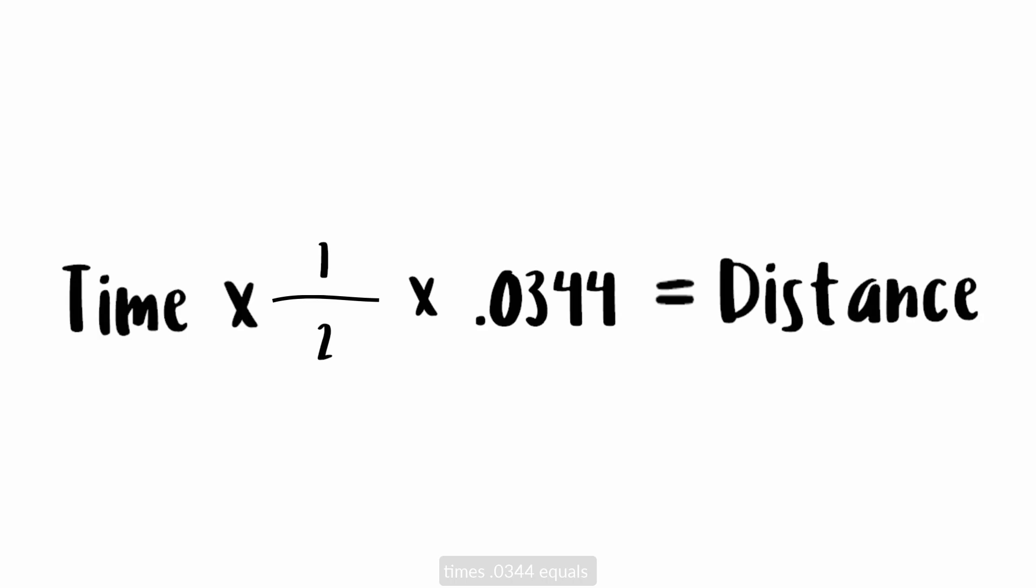More generally speaking, we get the formula time times 1 half times 0.0344 equals distance, where time is measured in microseconds and distance is measured in centimeters.